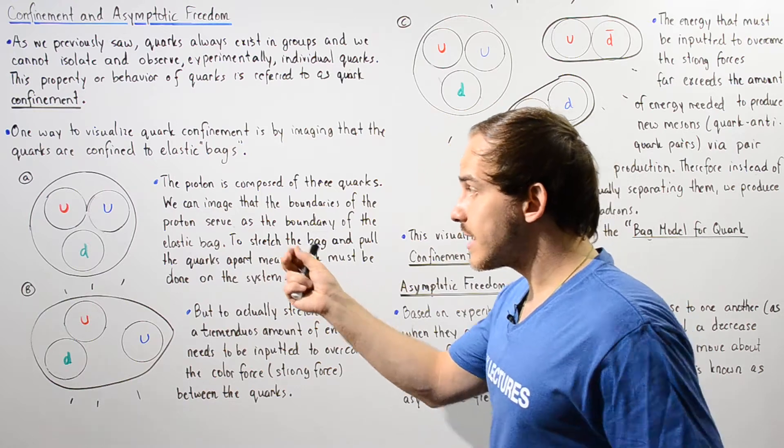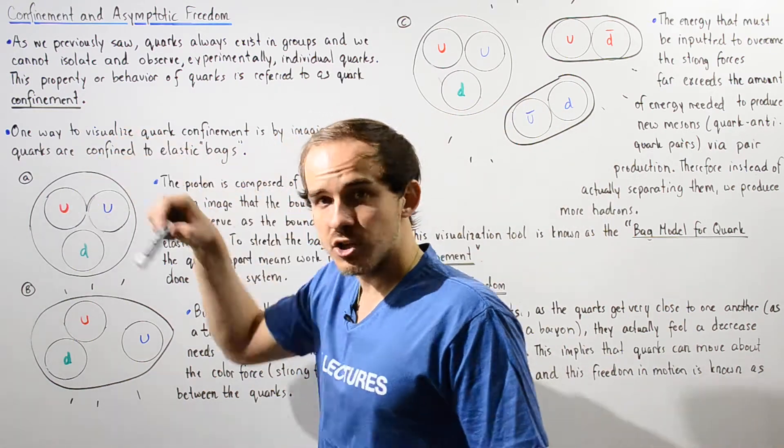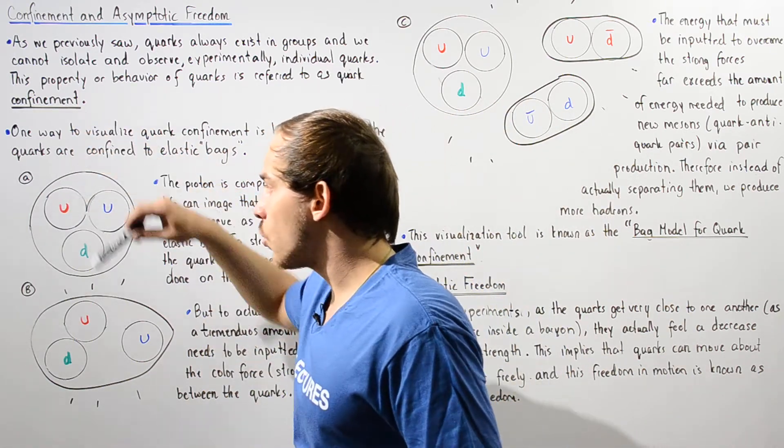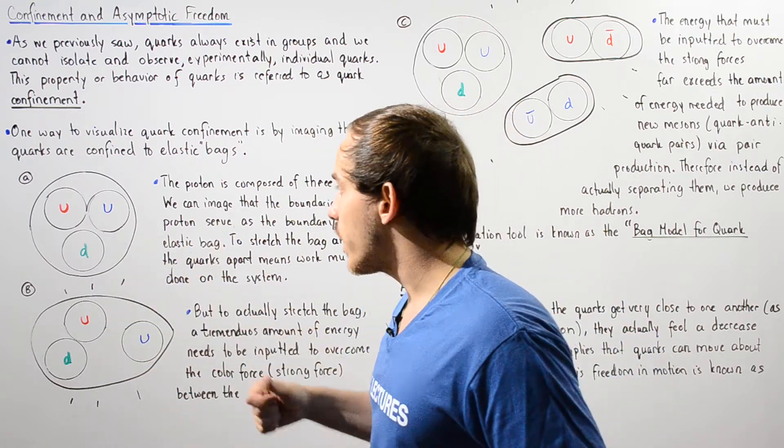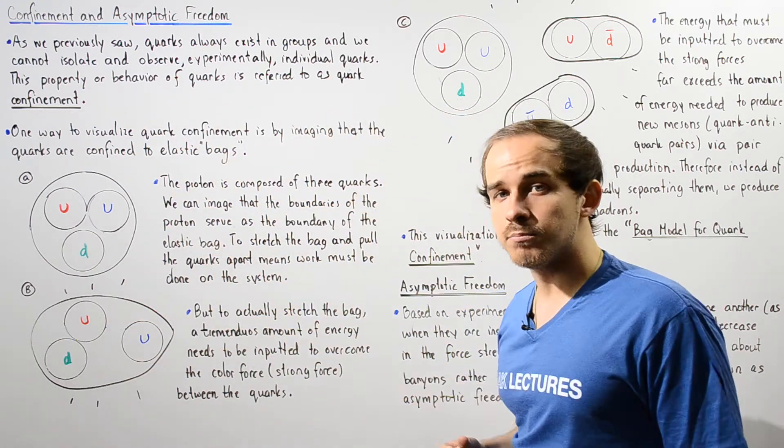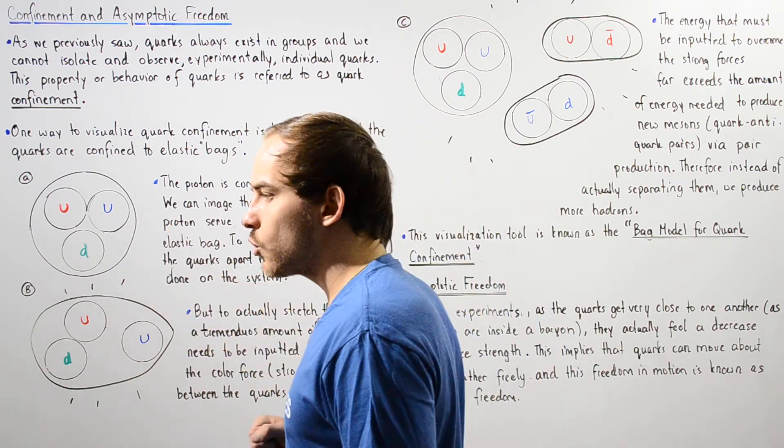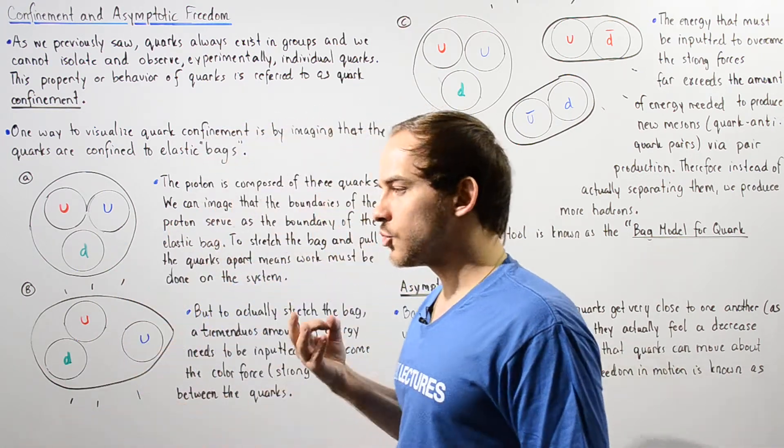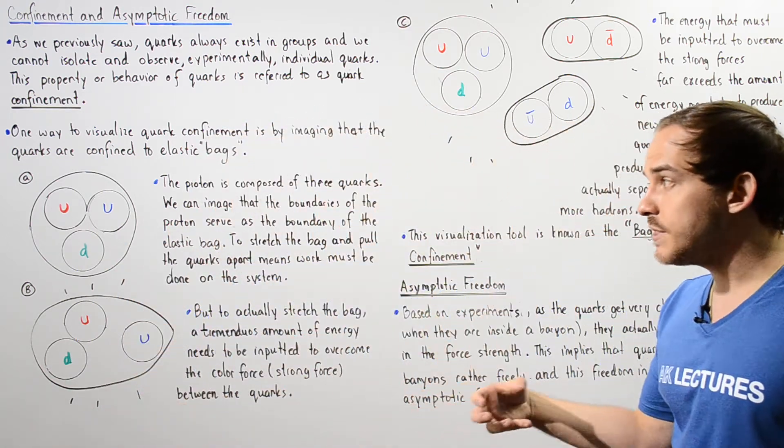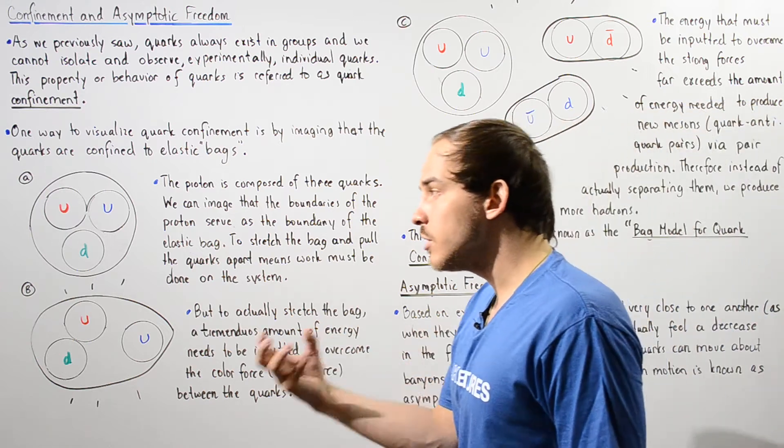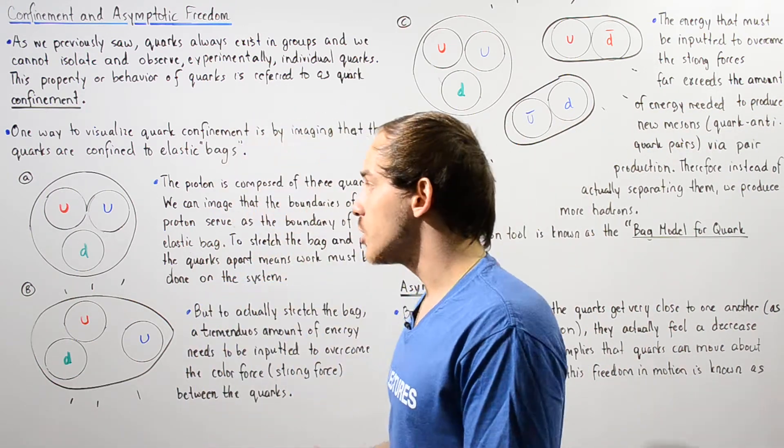Inside this proton, we have three quarks. We have the up quark, which has the color red, the other up quark that has the color blue, and the down quark, which has the color green. Each one of these colors produces a color charge, giving the quarks color charge.